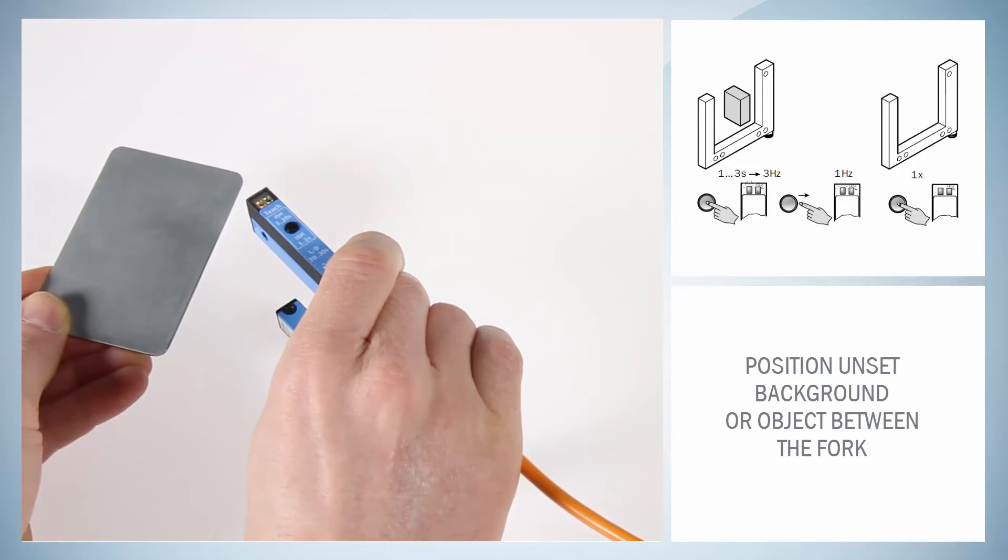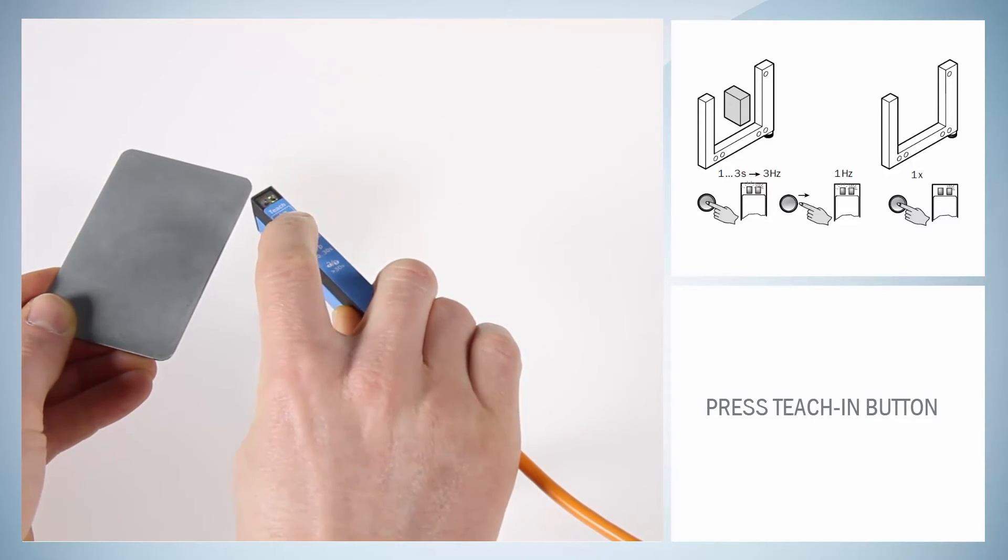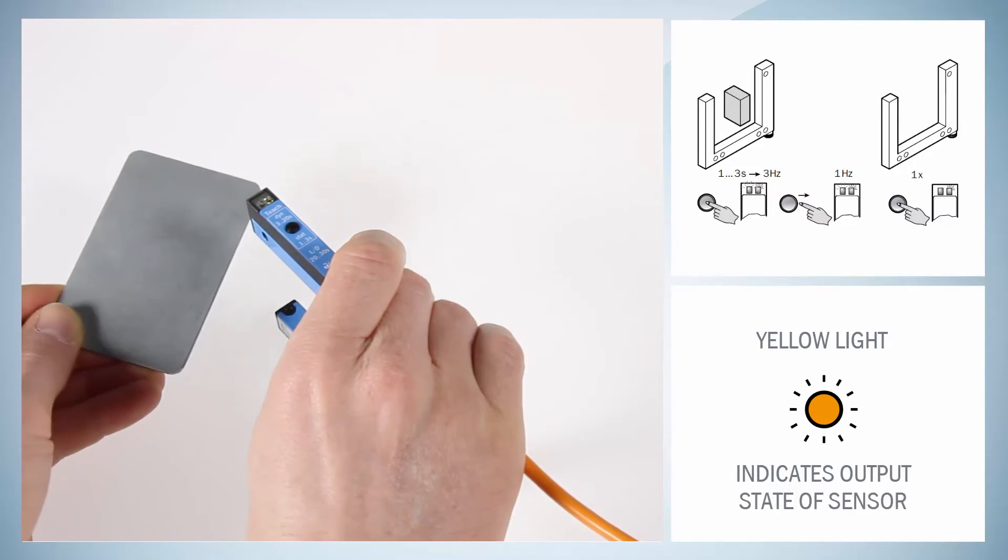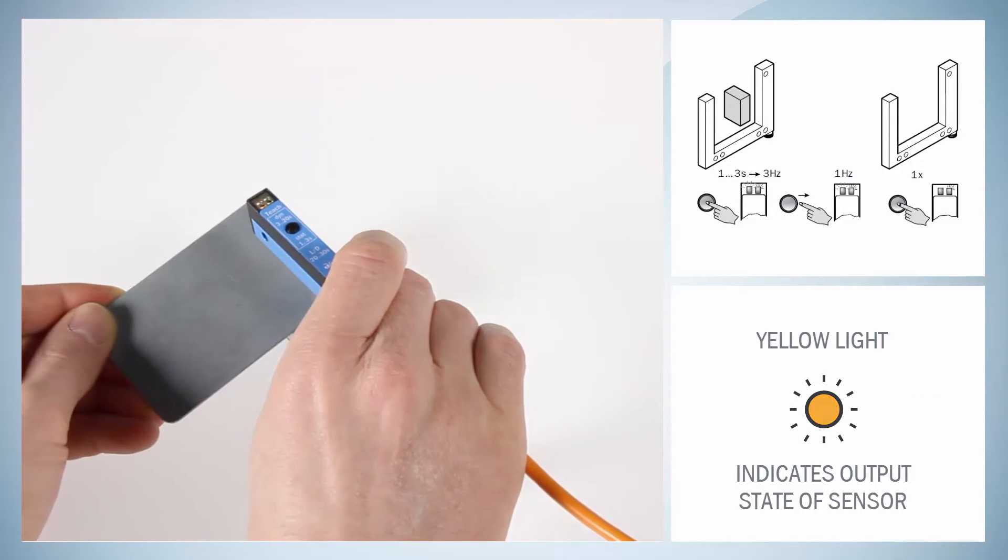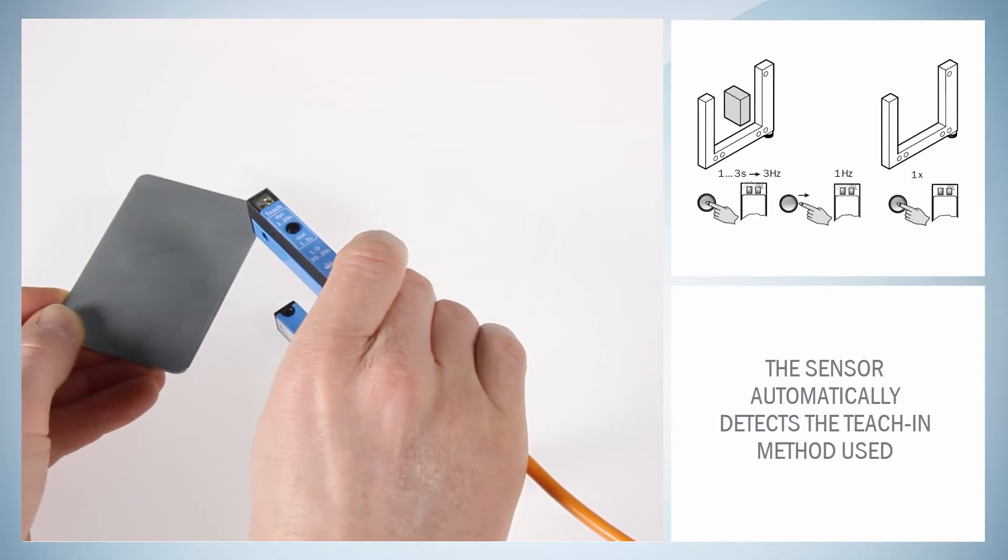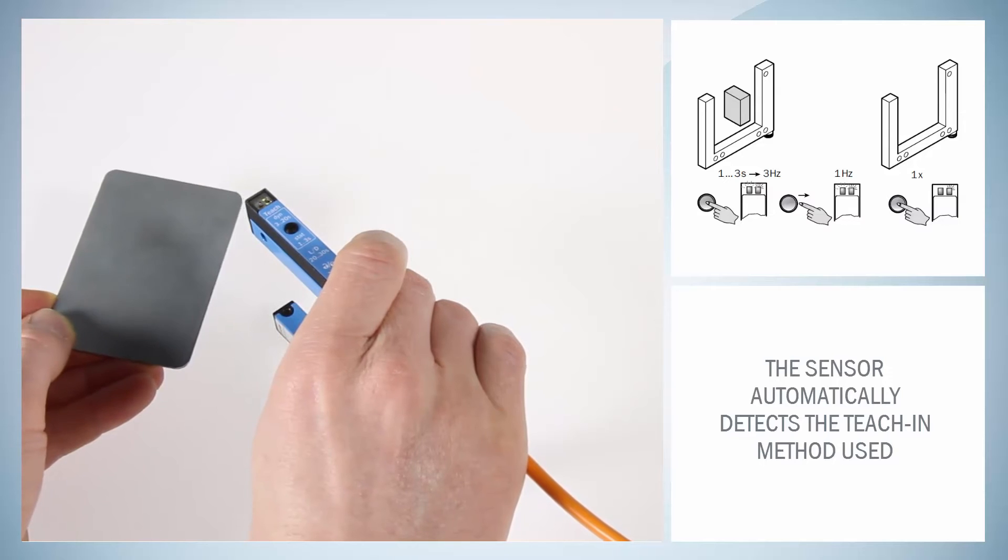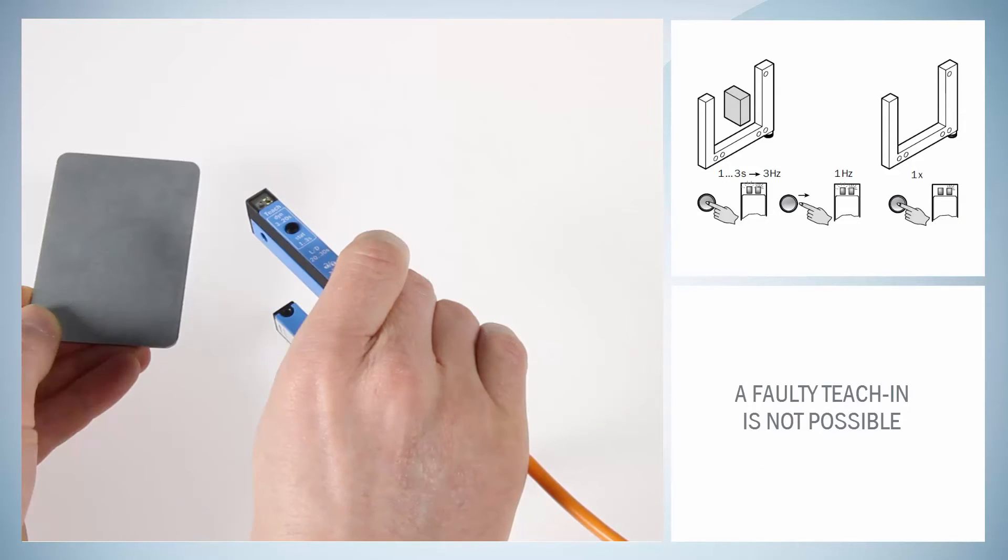To end the Teach-In, place the material that has not yet been set between the fork and press the Teach-In button again. If the Teach-In is successful, the function indicator directly indicates the output state of the sensor. The sensor automatically detects whether a 2-point Teach-In or a 1-point Teach-In has been carried out. A faulty Teach-In is therefore not possible.